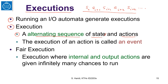There is also a notion of fair execution. A fair execution is an execution where internal and output actions are given infinitely many chances to run. This means that if an output action is enabled, it should have infinitely many chances to execute. When we write algorithms specified by input-output automata, we always talk about fair executions — these are the ones we are interested in and want to prove satisfy certain properties.